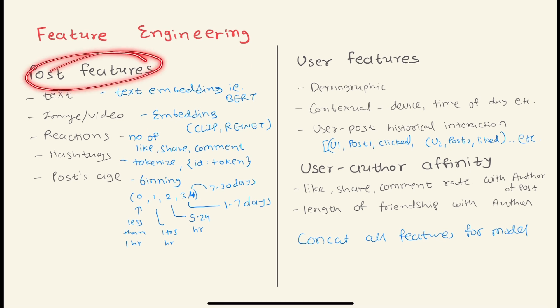Then let's come to post features. We may have textual data in the post, so we can convert into text embeddings using, let's say, BERT. We may have images and videos we can convert into embeddings using CLIP or ResNet or similar models. Then we track number of reactions like how many likes, shares, comments on that particular post. We can use the hashtags, tokenize them, and save them. We can also track the age of the post in a binning manner, so we can bin it in, let's say, five different buckets.